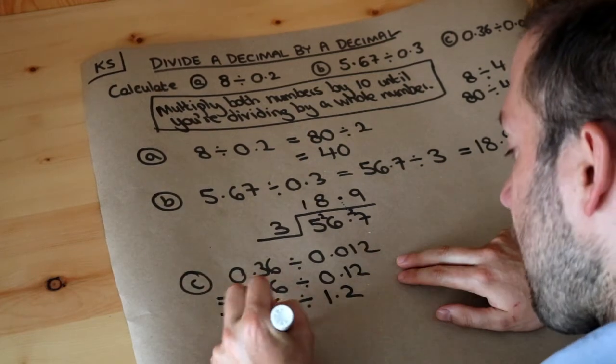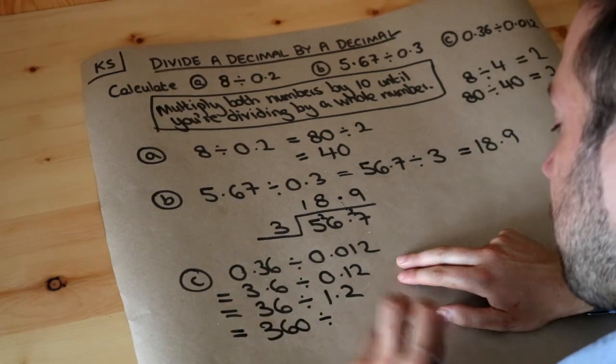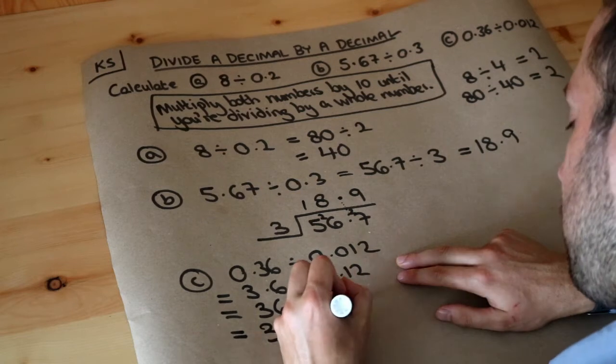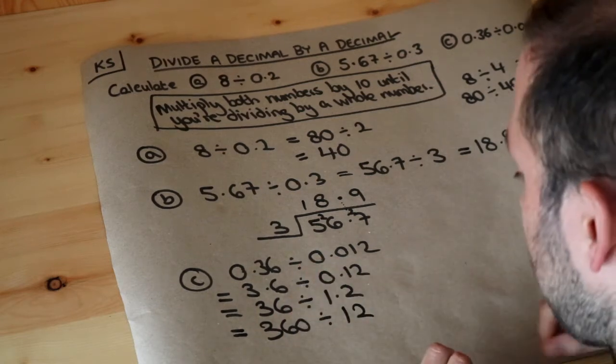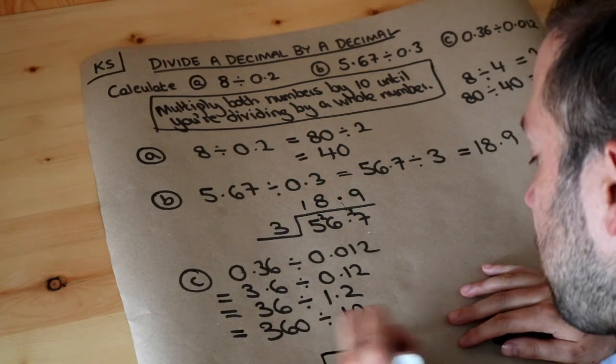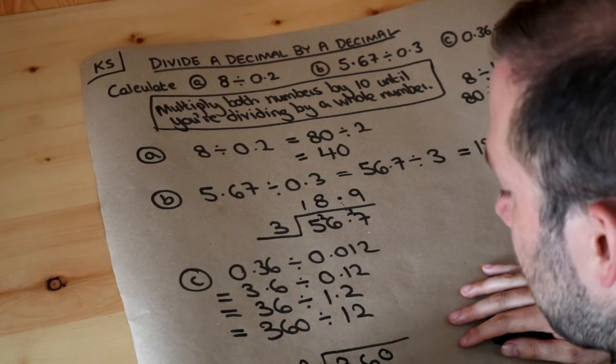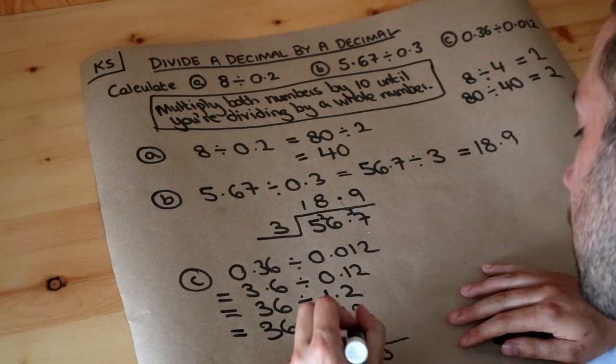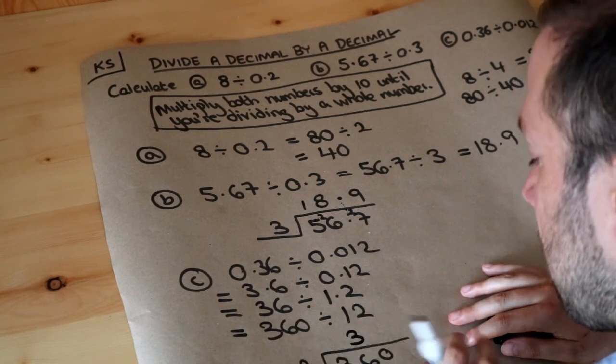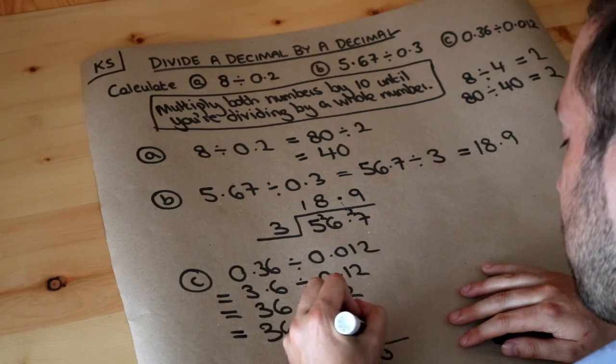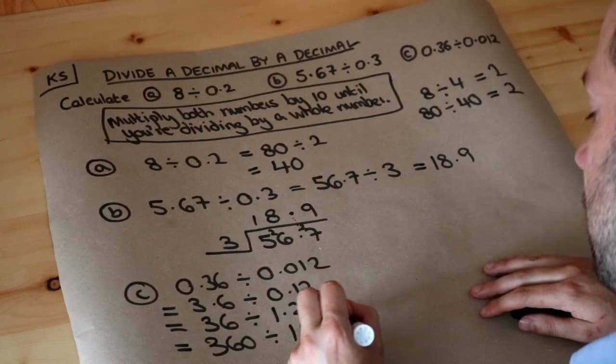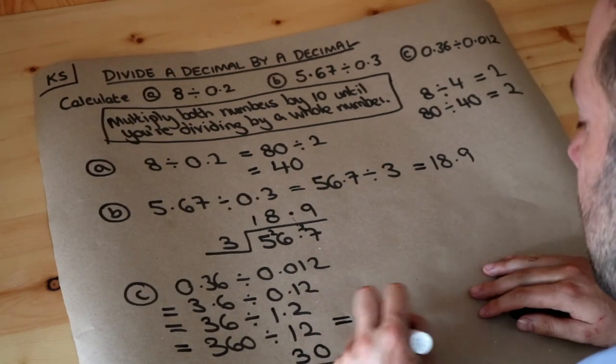So we need to do 360 divided by 12. If we did bus stop, but you might be able to do this in your head. How many 12's go into 3? You can't do that. But 12's into 36 goes 3 whole times, no remainder. 12's into 0, it's just 0. So the answer is 30.